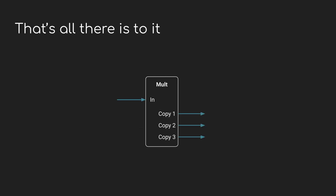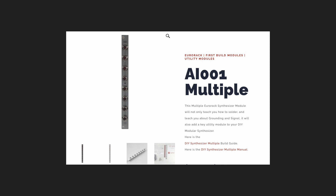It would be hard to get much more simple than this. You give it an input signal and it outputs multiple copies of that same signal. Clocks, triggers, general CV, audio — doesn't really matter. Voltage goes in, multiple copies come out. And since they are so simple, they're also dead easy to build and a great first project if you're interested in getting into DIYing your own gear.